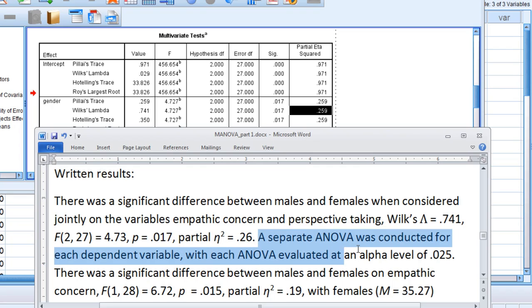with each ANOVA evaluated at an alpha level of 0.025. Recall that's the Bonferroni adjustment or correction.